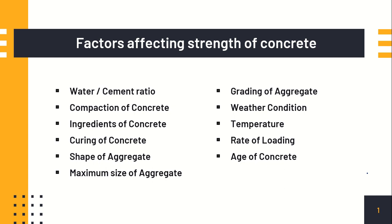On the screen you can see the following factors which drastically show their influence on the strength parameters of concrete: water cement ratio, compaction of concrete, the ingredients or constituent materials used to manufacture the concrete, curing of concrete, the shape of aggregates, the maximum size of aggregate, grading of aggregate, weather conditions or environmental factors, temperature, rate of loading, and the age of the concrete.